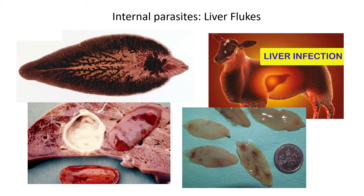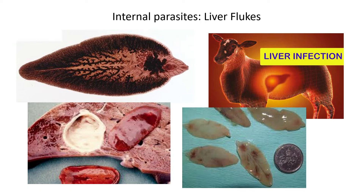Another internal parasite is the liver fluke — a very interesting one. Here is a zoomed-in image showing what the liver fluke looks like; they are very small, slightly larger than a coin. It is called the 'liver fluke' because 'fluke' refers to its shape and 'liver' because it literally affects the liver of livestock. A cross-section through a sheep's liver shows the fluke causing large lesions, slowly degrading the tissue.